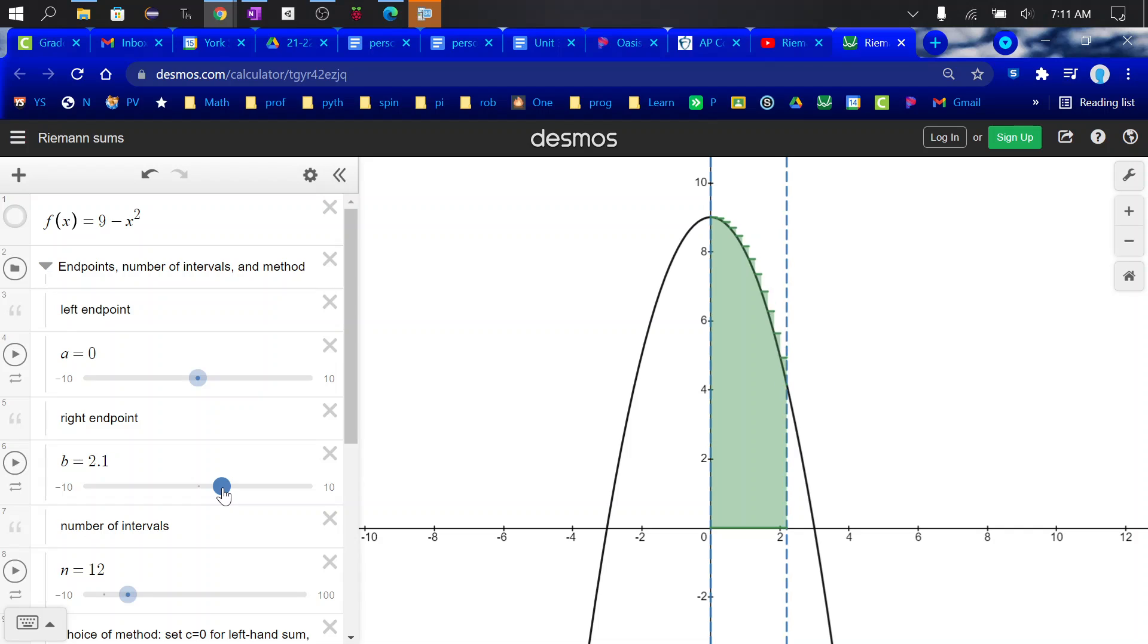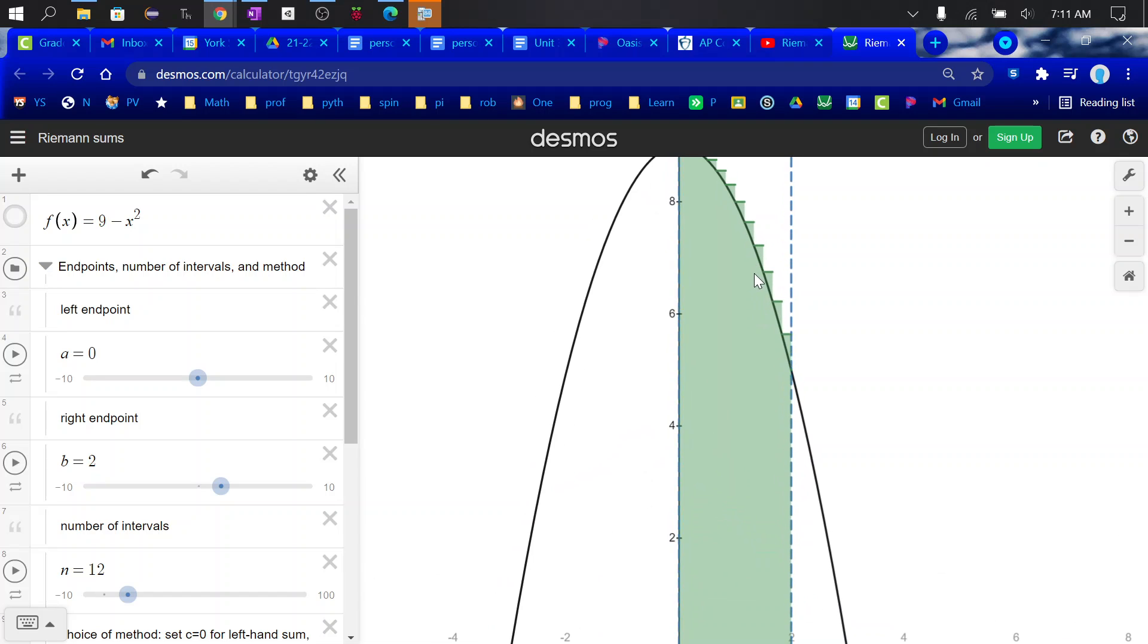If I just wanted to go to 2, there it is. B is 2. You can see that there are all the rectangles in there.